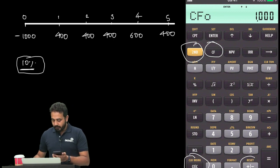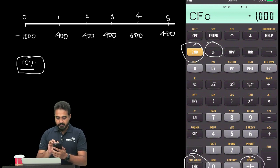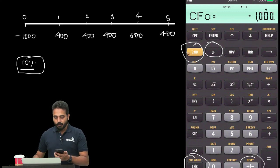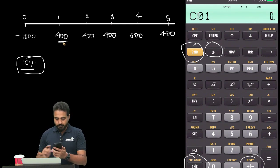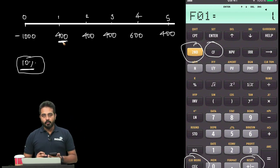I'll use the plus/minus button and press Enter to make it negative. So I have CF0 as -$1,000. Then press the down arrow. CF1 is $400, so I'll enter 400, press Enter, then press the down arrow.